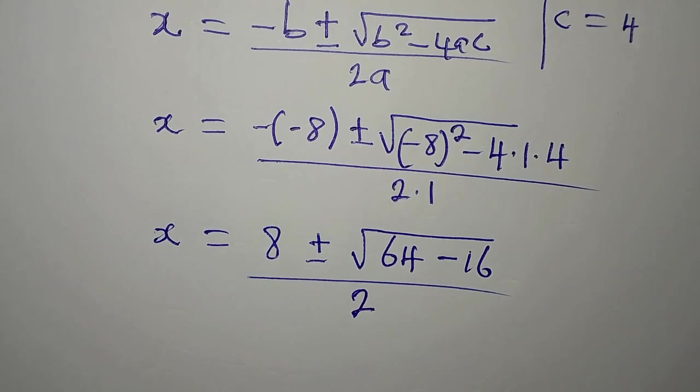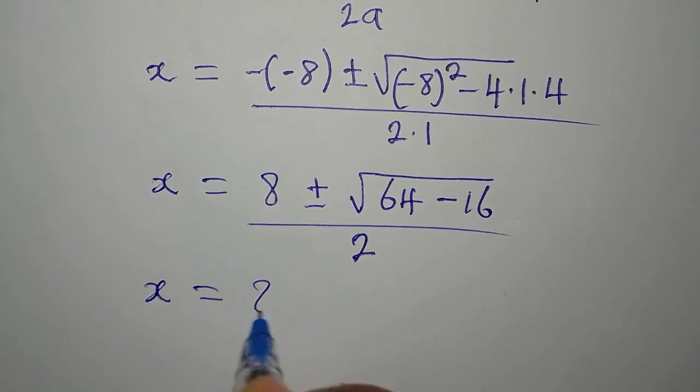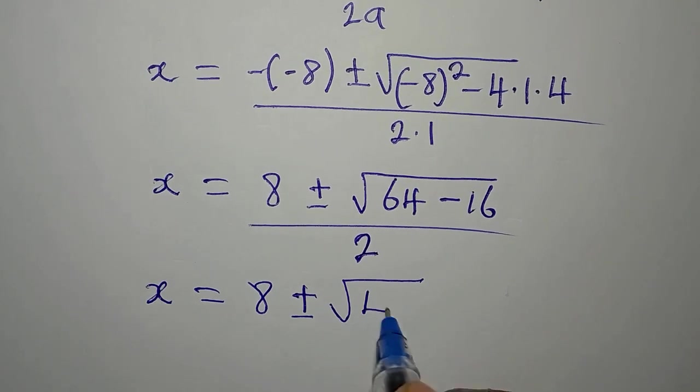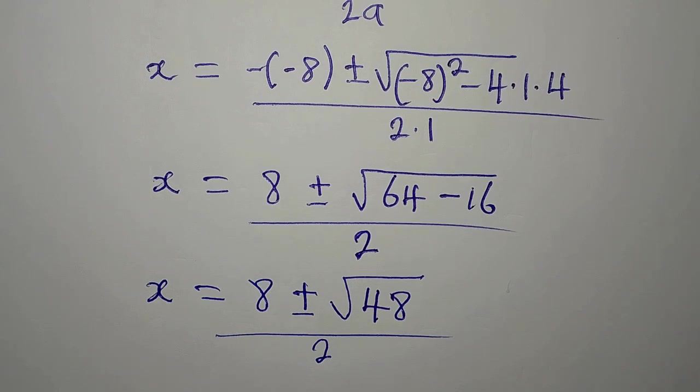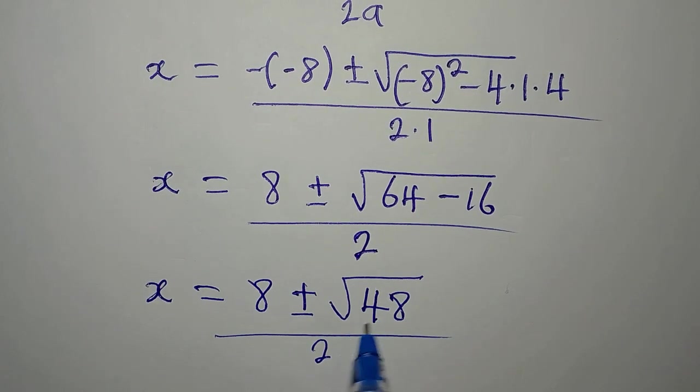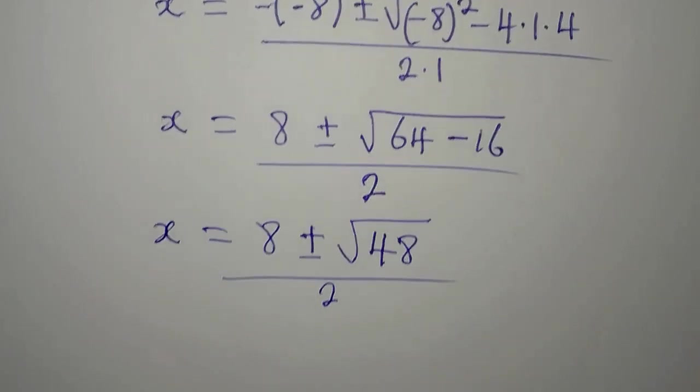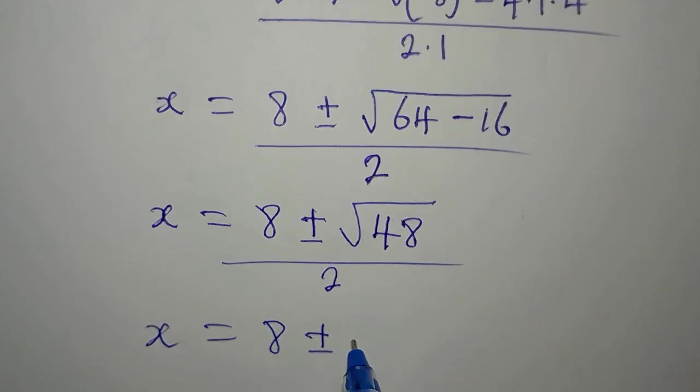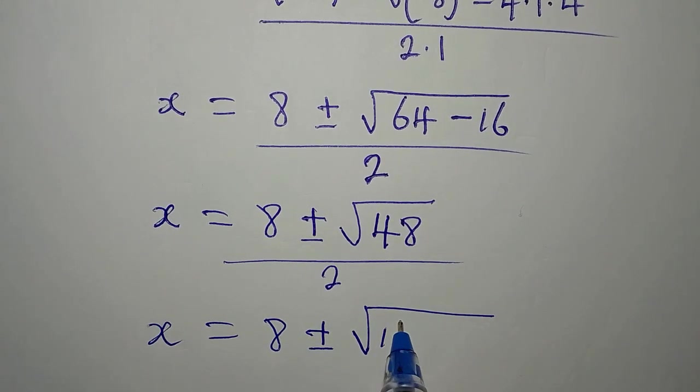So we are still continuing. Our X is now 8 plus or minus square root of 48, then we divide this by 2. I don't want to divide this yet because this also has to do with this root. So our X is 8 plus or minus square root of, what is 48? 48 is 16 multiplied by 3.